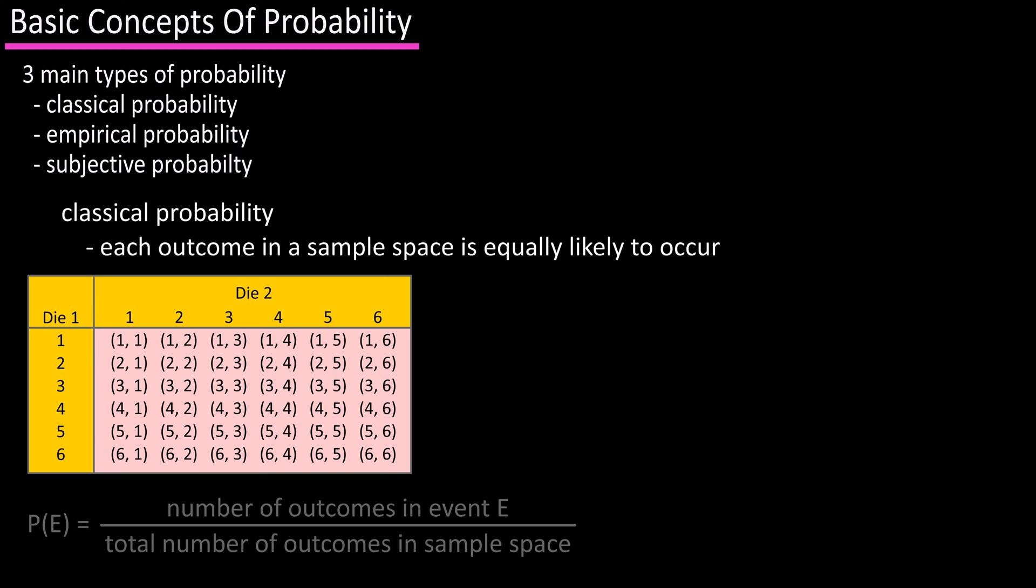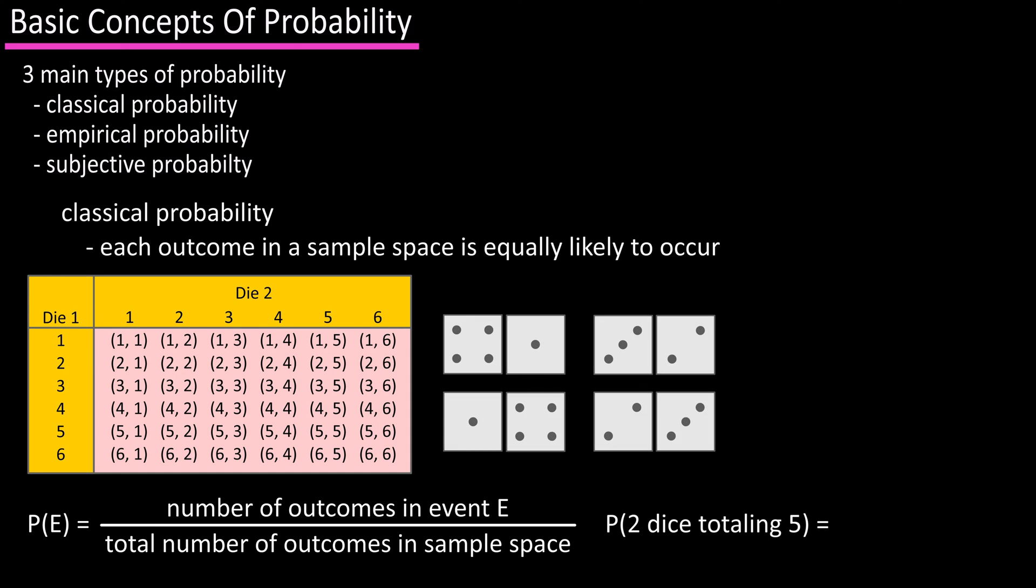The formula for this is P(E), probability of any event equals the number of outcomes in event E divided by the total number of outcomes in the sample space. So the probability of the two dice totaling five is P(5) equals 4, the number of possible combinations that total up to five, divided by 36, the total number of outcomes in the sample space.